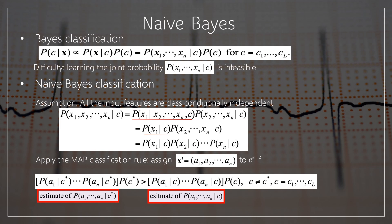Here we apply the independence assumption and the MAP classification rule: assign X dash equal to A1, A2, A3, so on up to An to C star if P of A1 given C star, so on up to P of An given C star, into P of C star, is greater than P of A1 given C, so on up to P of An given C, into P of C, where C not equal to C star and C equal to C1, C2, C3 so on up to Cl.